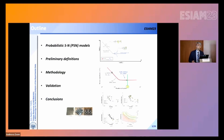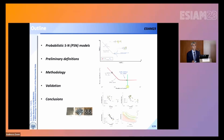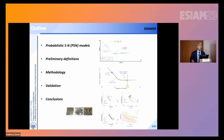This is the outline of the presentation. I will start by recalling typical probabilistic SN models in fatigue for high cycle and low cycle. Then I will give some preliminary definitions — the main ingredients for the application of the statistical methodology. Then I will apply the methodology to some experimental datasets and show the results, and finally I will draw some conclusions.